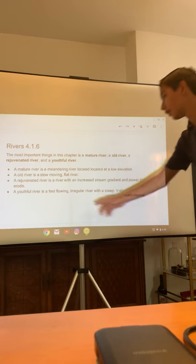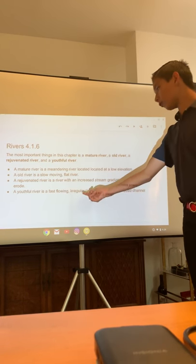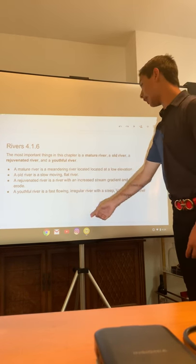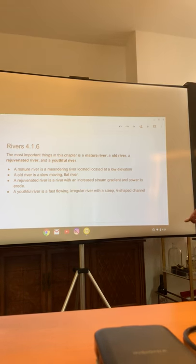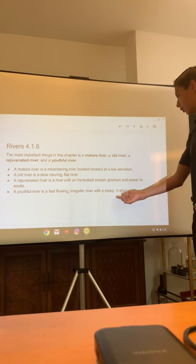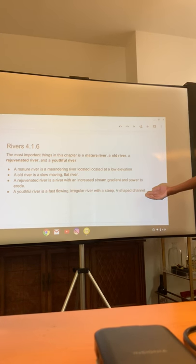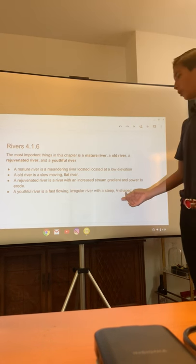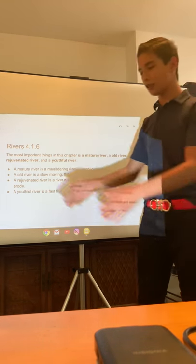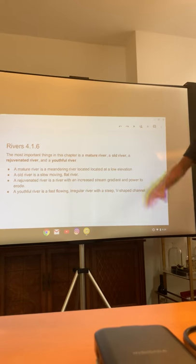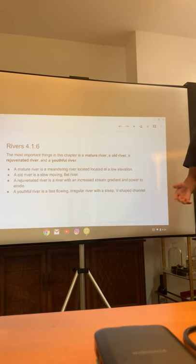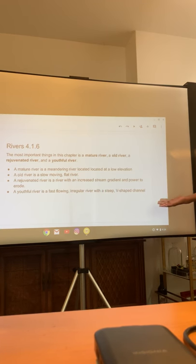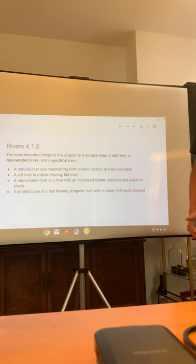A youthful river is a fast-flowing, irregular river with a steep V-shaped channel — this is the super-fast one, moving super fast with different shapes like a V-shape, and it's super steep too.